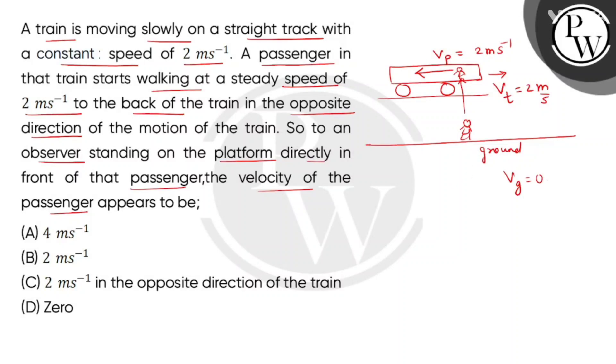We have to find basically the velocity of the passenger with respect to the ground. So first of all, we will call velocity of train with respect to ground, this is equal to 2 meters per second. How can we express this? Velocity of train minus velocity of ground, this is 2 meters per second. Now we take velocity of passenger with respect to train. Because it's in the opposite direction, we take minus 2 meters per second. So this will be Vp minus Vt, this is equal to minus 2 meters per second.